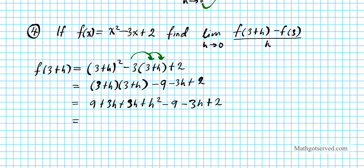Let's go ahead and combine like terms. We have h squared. Then we can combine 3h, 3h, and negative 3h — that's simply going to give us positive 3h. And then we combine the constants: positive 9 and negative 9 and positive 2. The 9s cancel out, so this gives us positive 2. So f of 3 plus h equals h squared plus 3h plus 2.